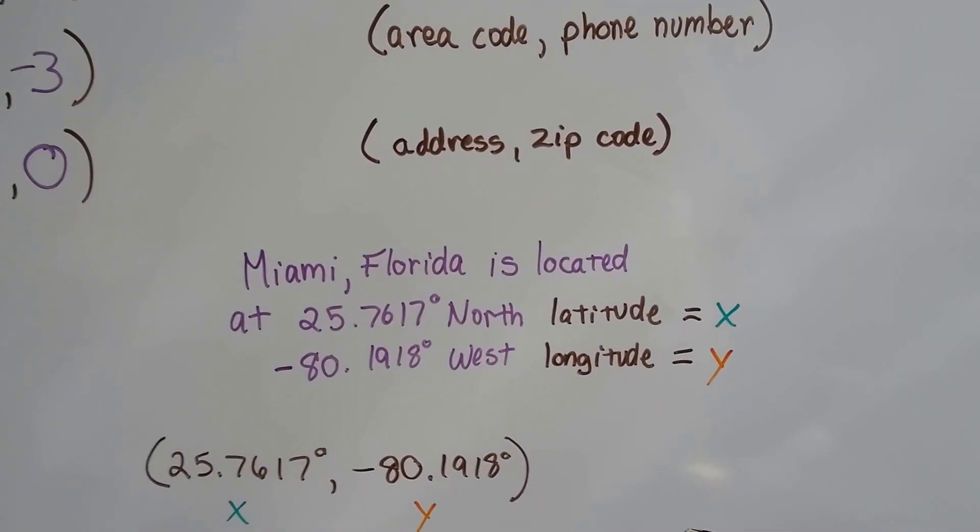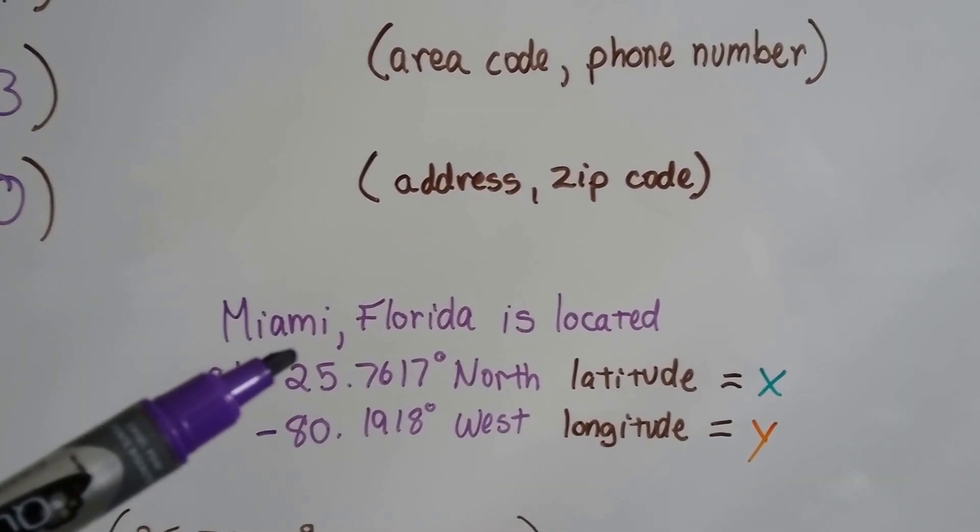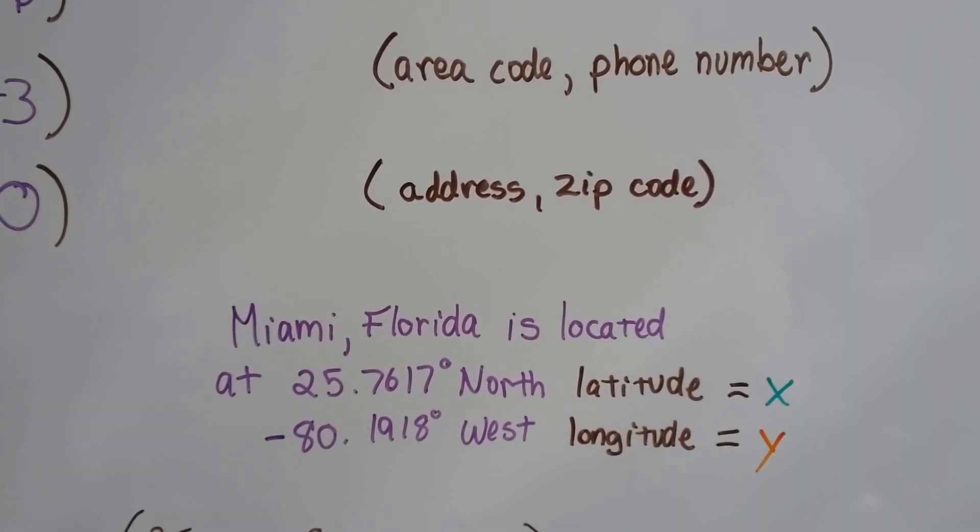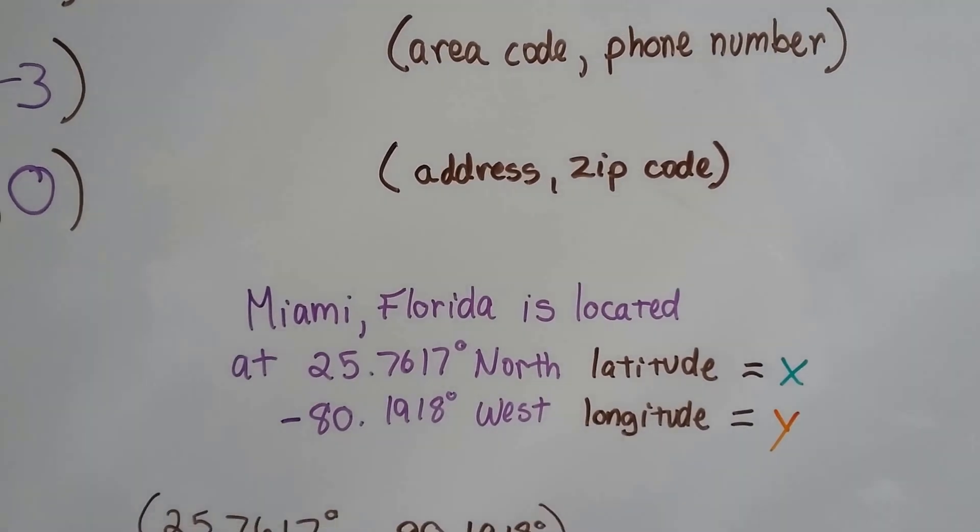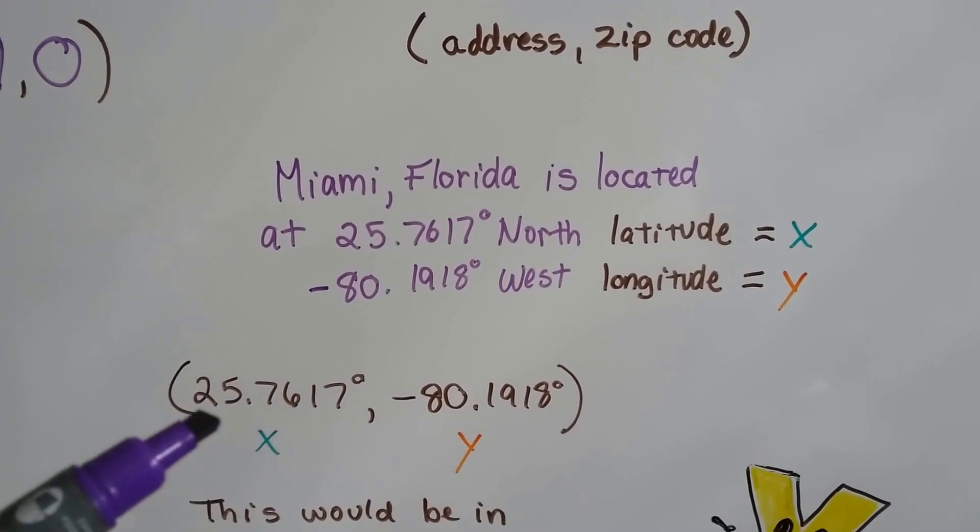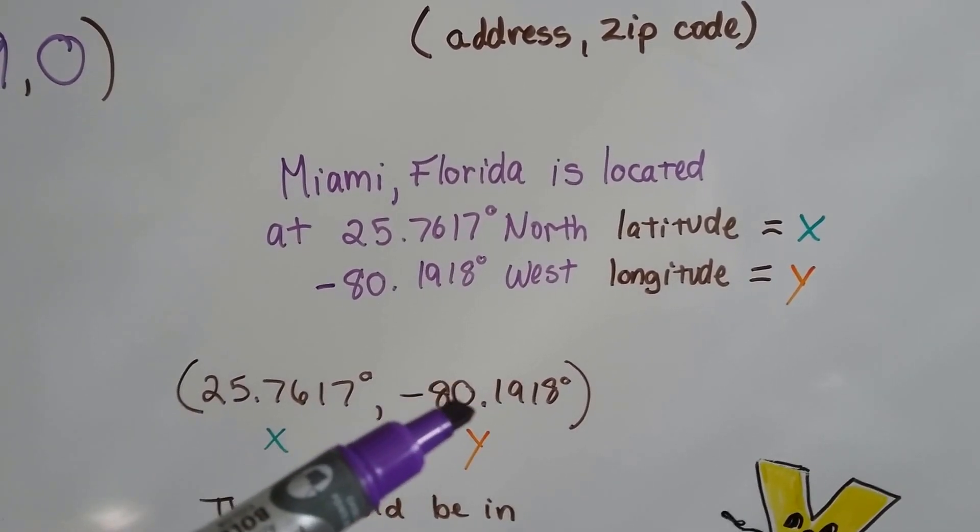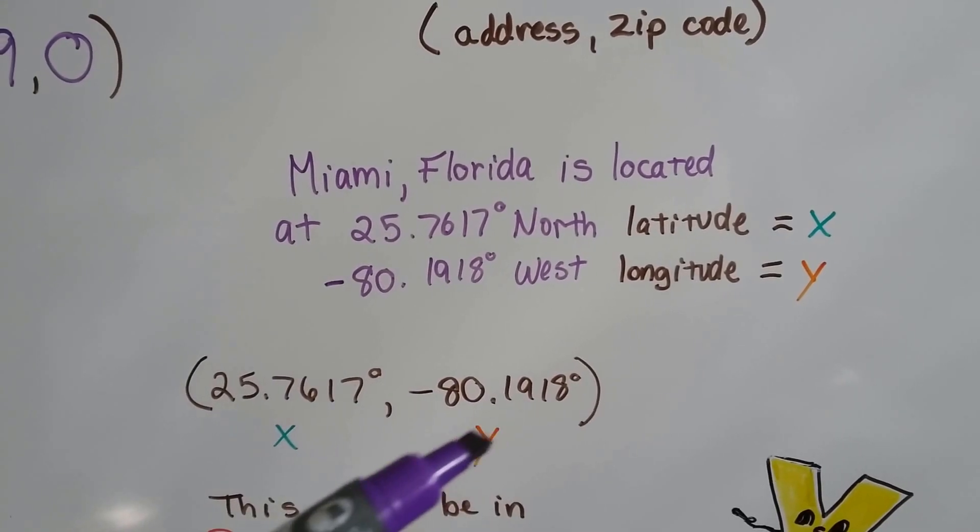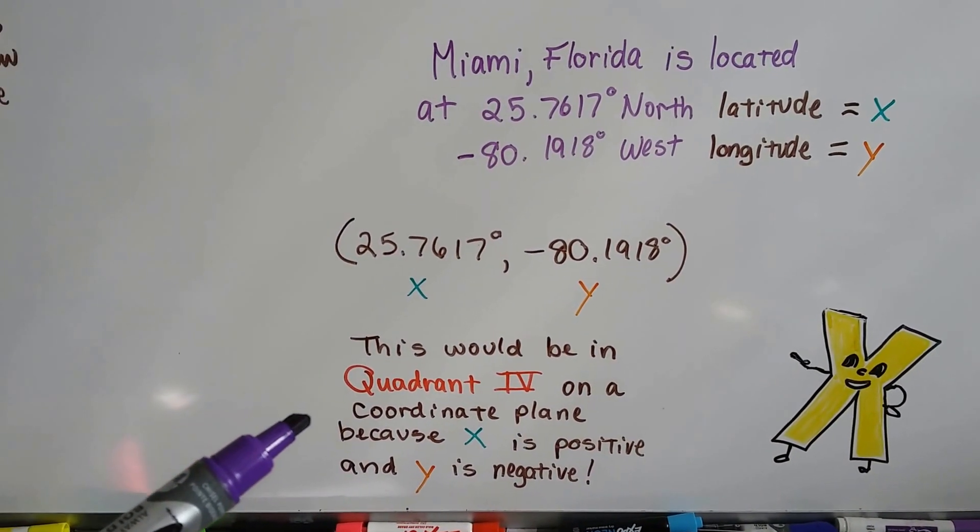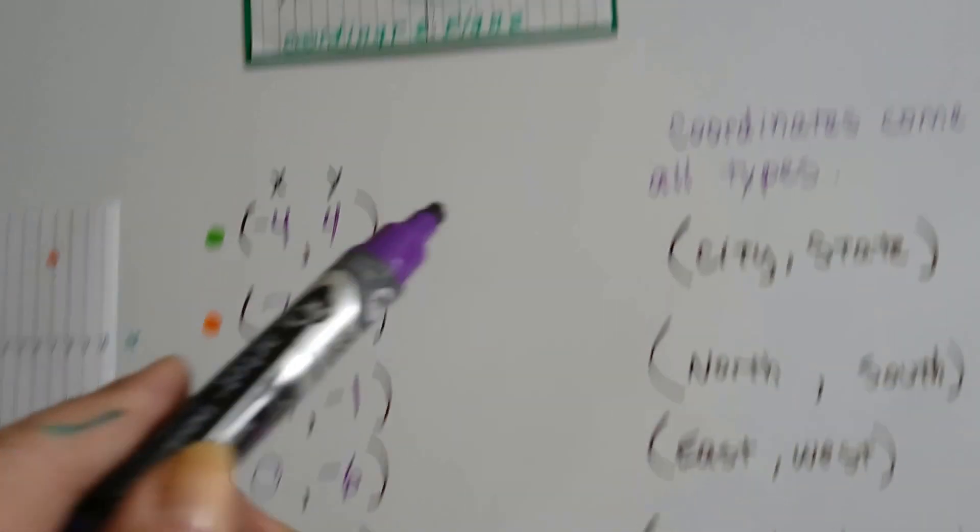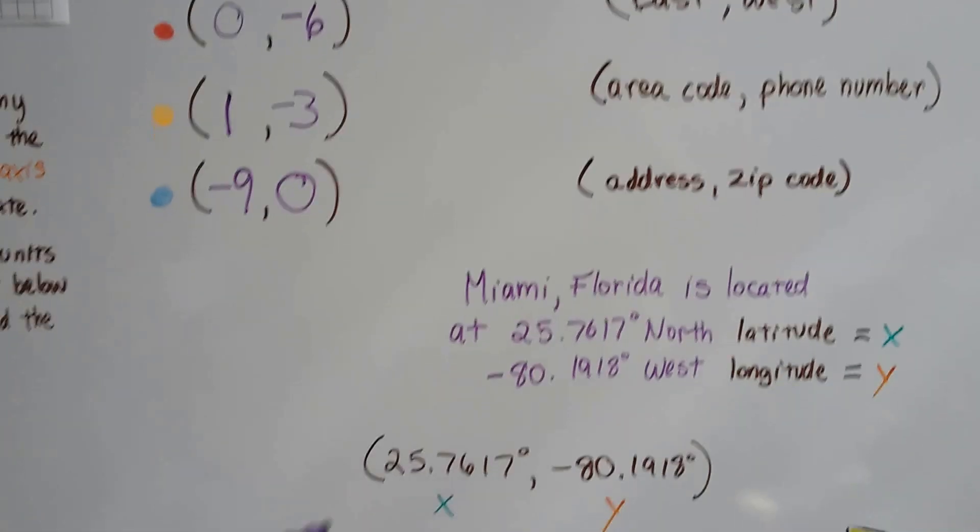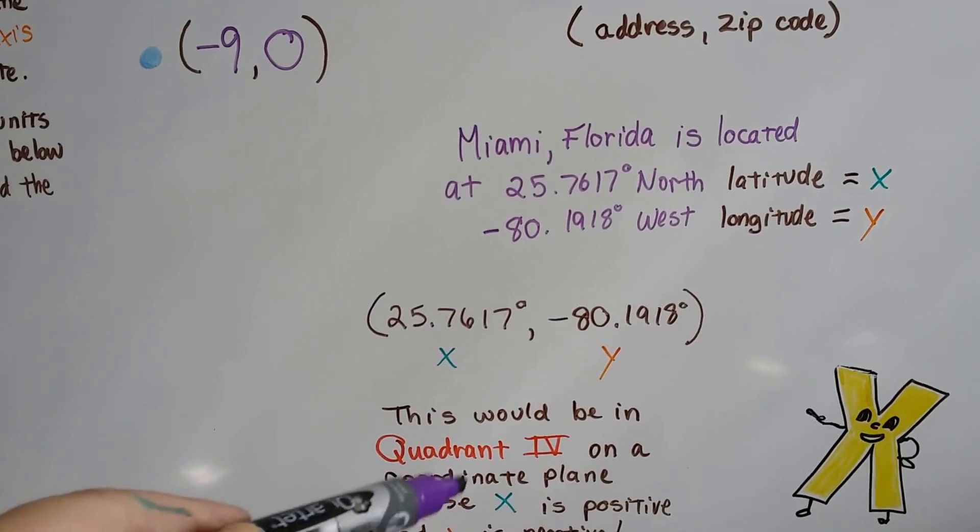Did you know Miami, Florida is located at approximately 25 north latitude and negative 80 west longitude? Well, that would be the x and y coordinates. It would be 25.7617 degrees for x and negative 80.1918 degrees approximately for y. And it would be in quadrant four on the coordinate plane because x is positive and y is negative. When x is positive and y is negative, it's in the fourth quadrant. So if we were to put this on a plane, it would be in the fourth quadrant.